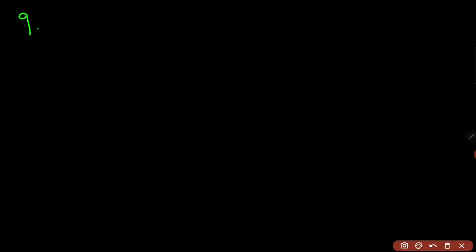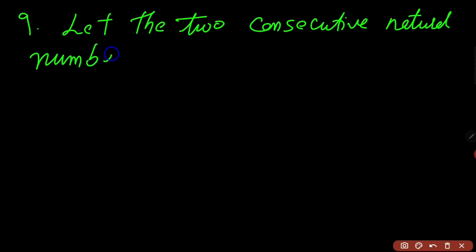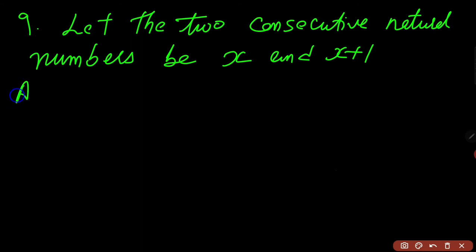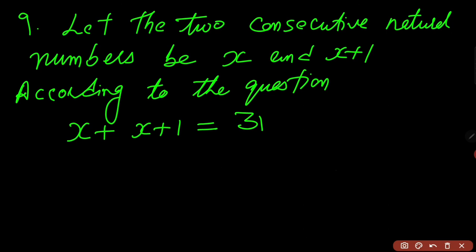Let the 2 consecutive natural numbers be x and x plus 1. According to the equation, we can write x plus x plus 1 is equal to 31. We have a linear equation here. So x plus x is 2x, plus 1 equals to 31.